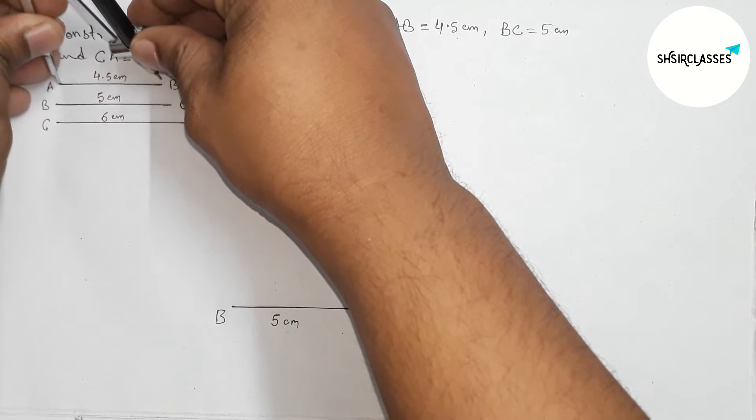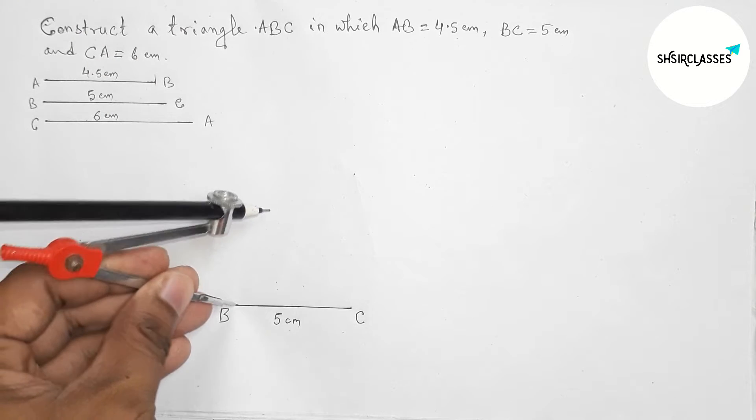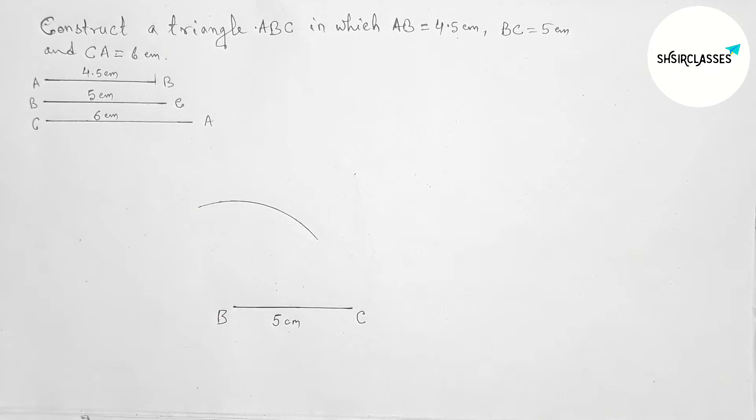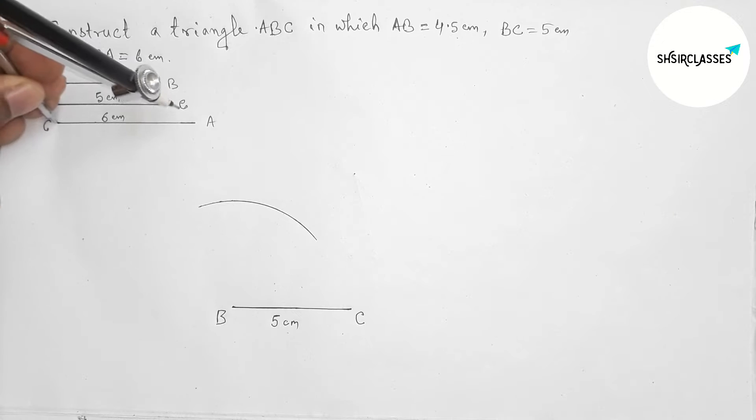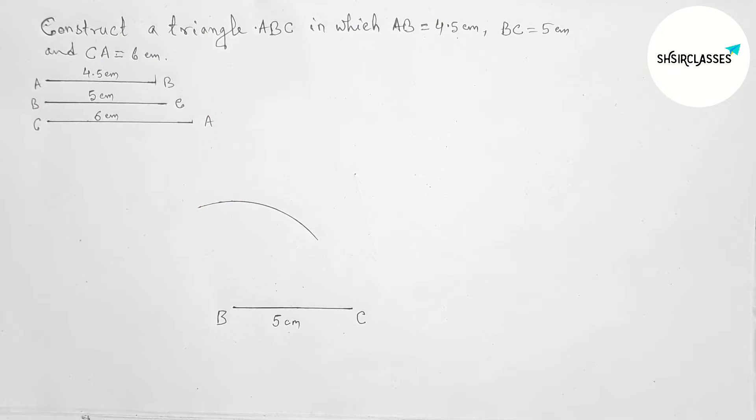With the help of a compass, by this way. So this is perfect. Now putting the compass on the point B and drawing an arc here. Now taking length CA equal to 6 centimeters by a similar way.